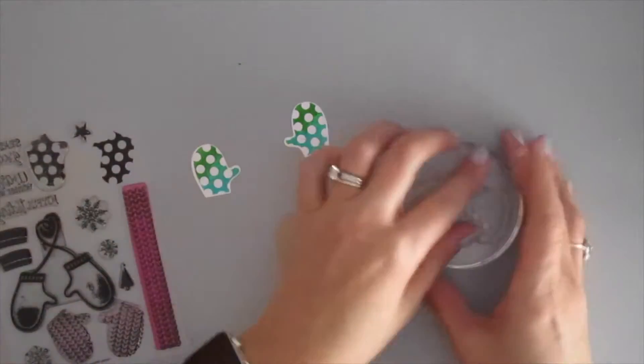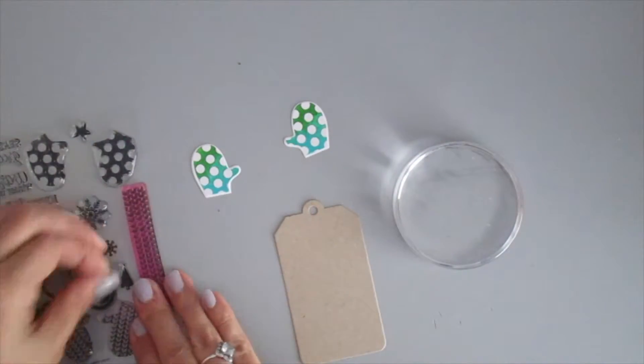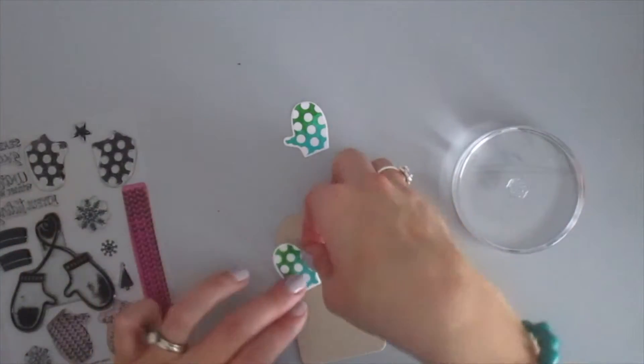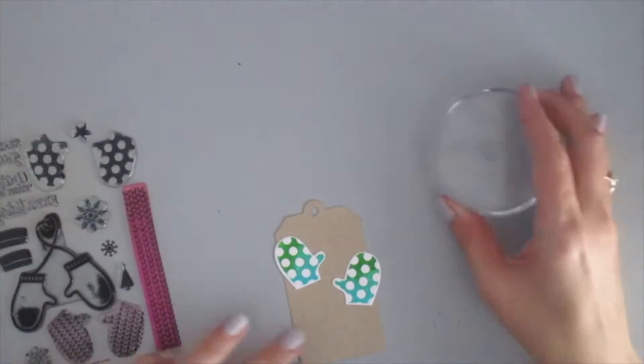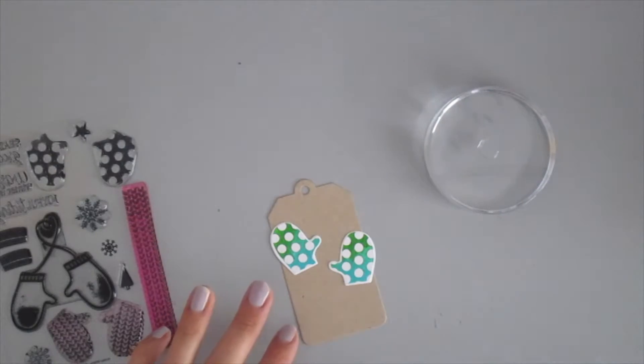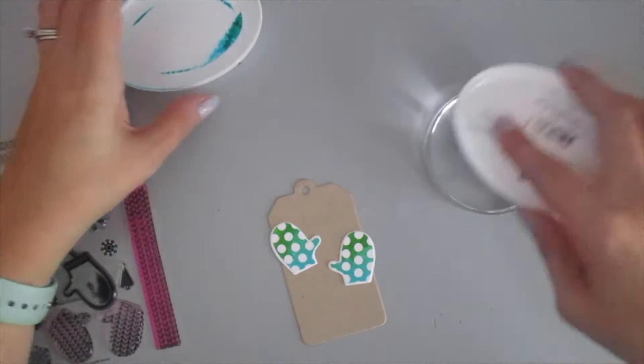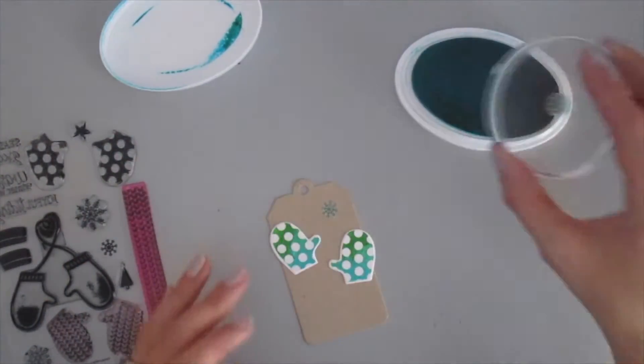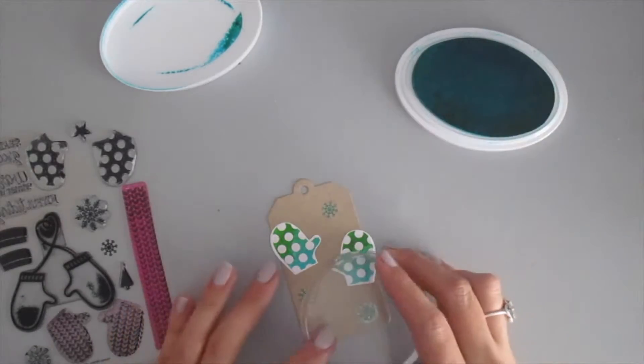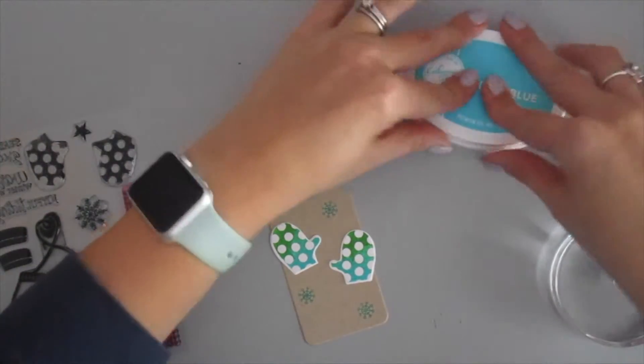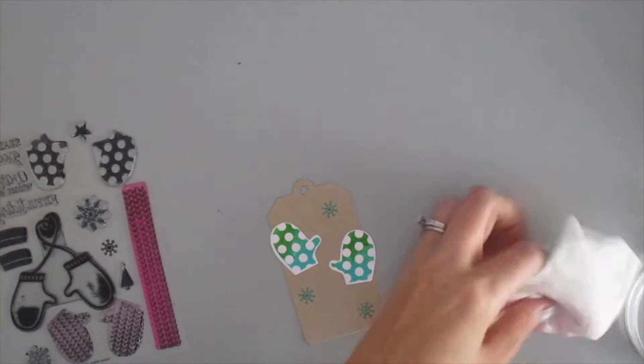So I'm just going to go ahead and put them on the tag. First you can see I lay out my tags. I do this with my cards too. Sometimes I'm not exactly sure how I'm going to do things. I'm kind of a stamp and go type of girl, like stamp this stuff and then figure out where to lay it later.